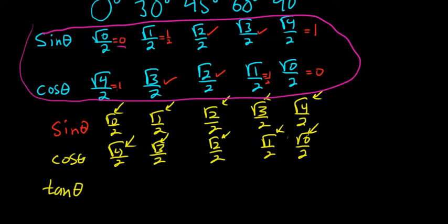So 0 over 1 is 0. And then you would do this over this. You'd have to divide these. So you would do 1 half over the square root of 3 over 2, square root of 3 over 2. So that would be 1 half times 2. So a little more work for tangent, you do have to do some math. So you just get 1 over root 3 for that one.